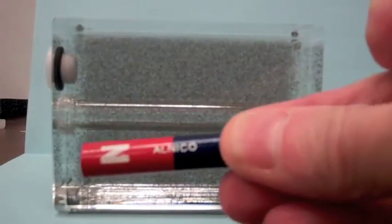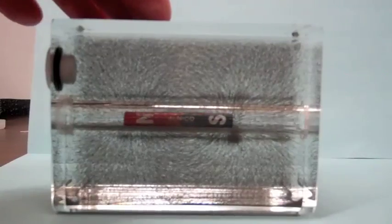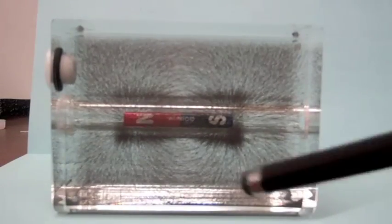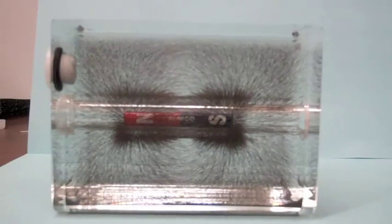I'm going to insert this bar magnet, and you can see how the iron filings are lining up along the magnetic field lines and then being drawn towards the poles.